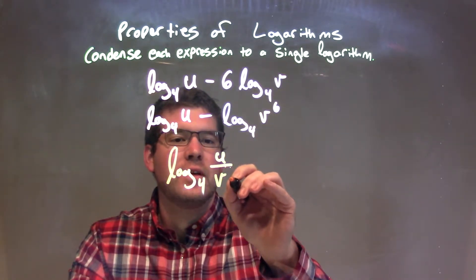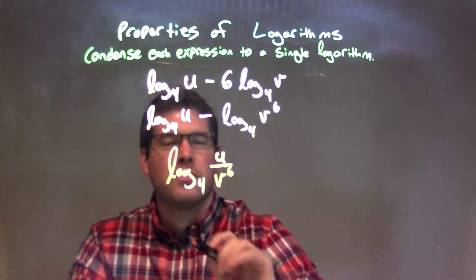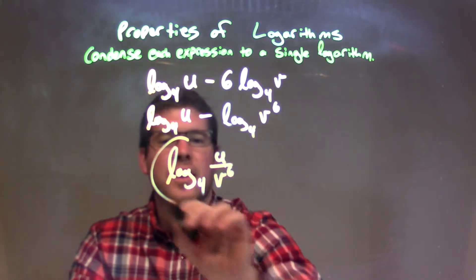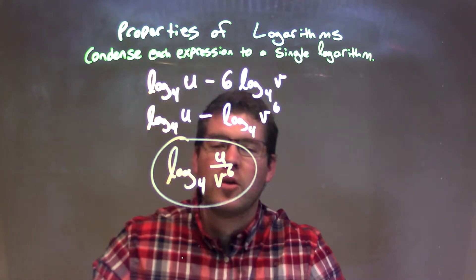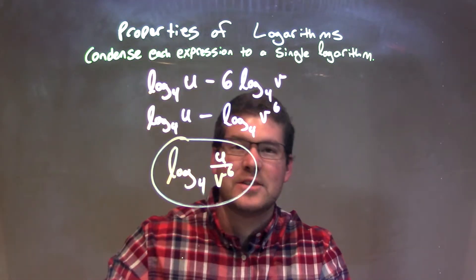Okay, that subtraction that's right there, that turns into that division. So, again, this makes our final answer log base 4 of u over v to the 6th power.